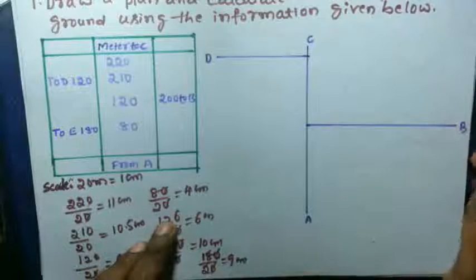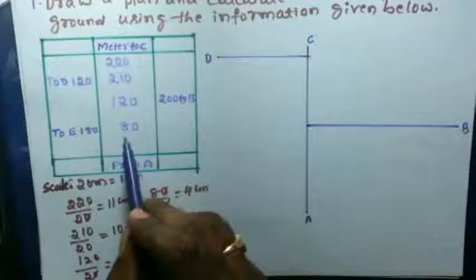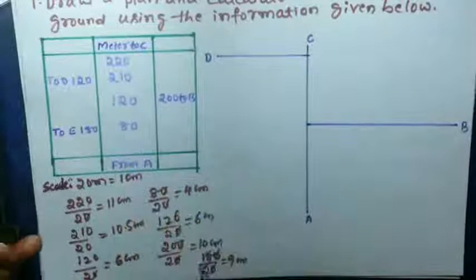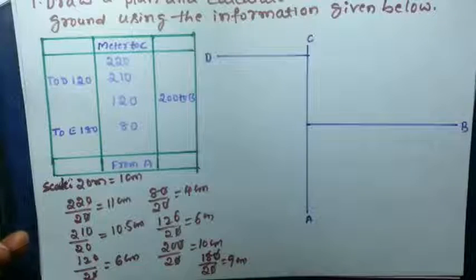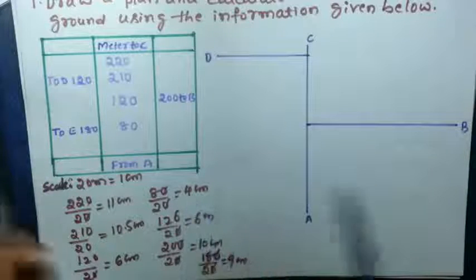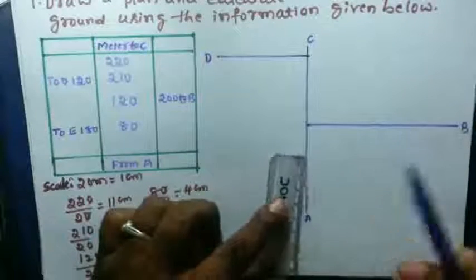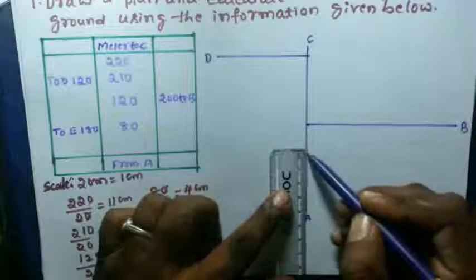Next, last one is AT. AT is converted into centimeter, that is equal to 4 centimeter. Measure 4 centimeter from A. Mark here.